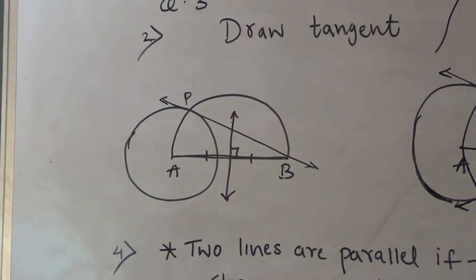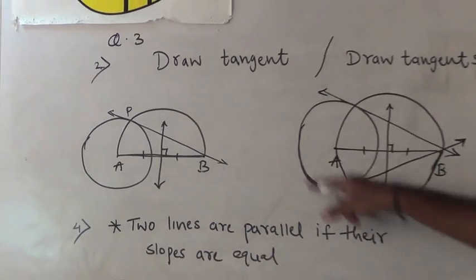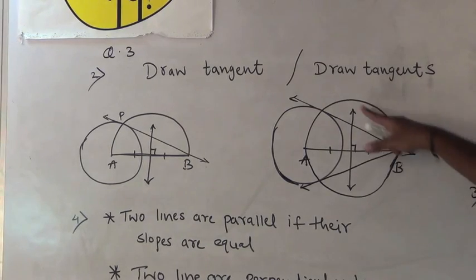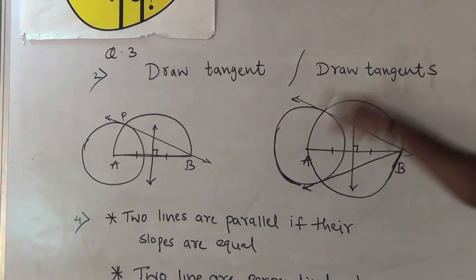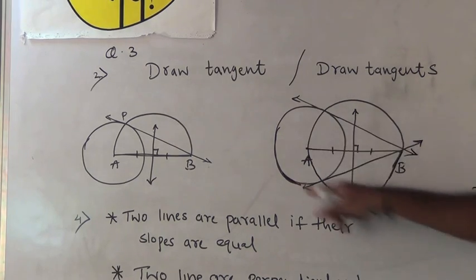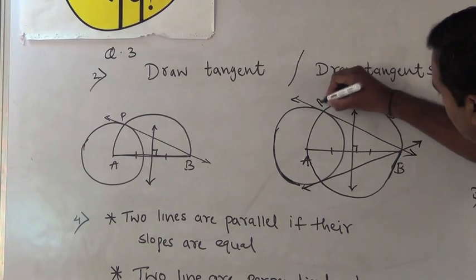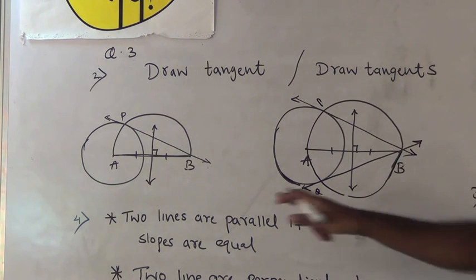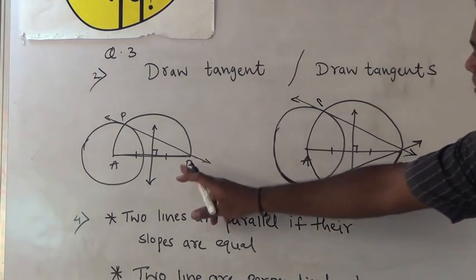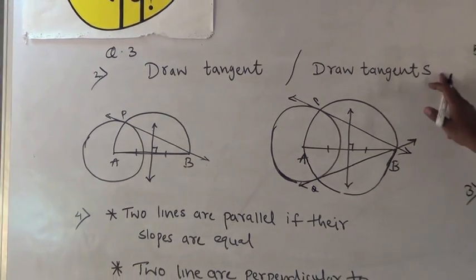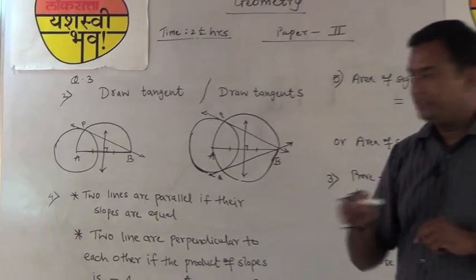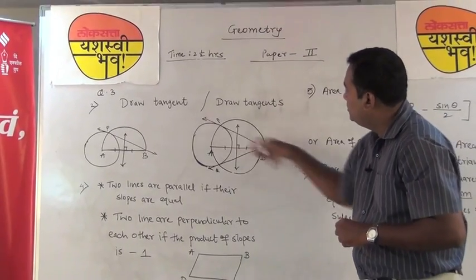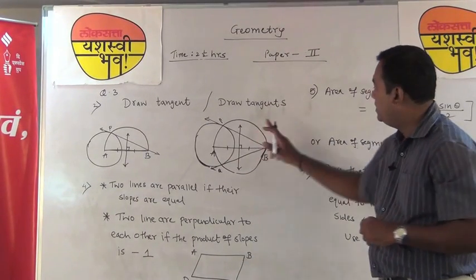If the question says 'draw tangents,' the procedure is the same — draw the circle, locate point B, bisect segment AB — but draw a complete circle instead of a semicircle. This circle intersects the given circle at two points P and Q, giving you two tangents: PB and BQ. That is the difference between 'draw a tangent' and 'draw tangents.'